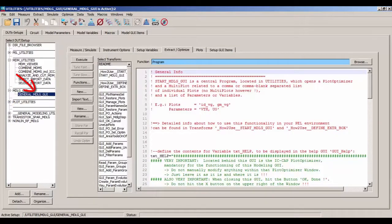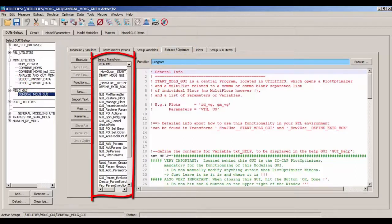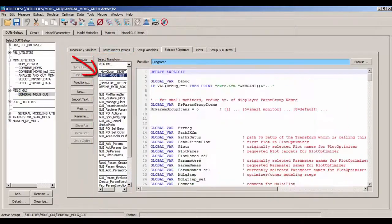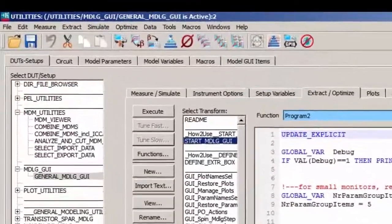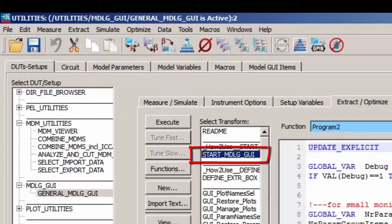In this setup, on the Extract Optimize tab, you will see a list of programs which ICCAP calls Transforms. All of them are like sub-programs to the main program, which is named Start Modeling GUI. And this is the program which will be called from your own model file. I will provide more details on this later.